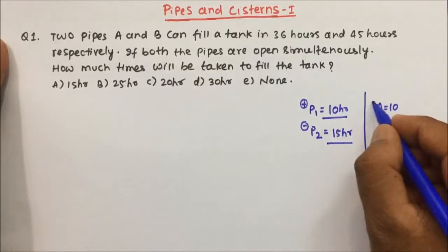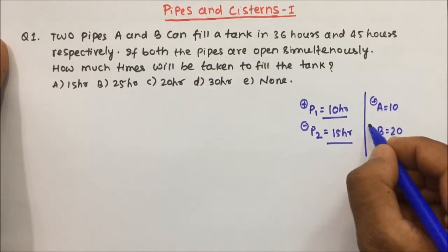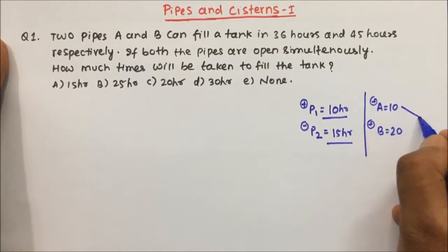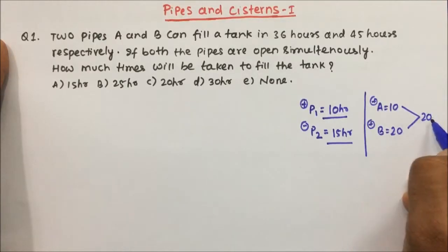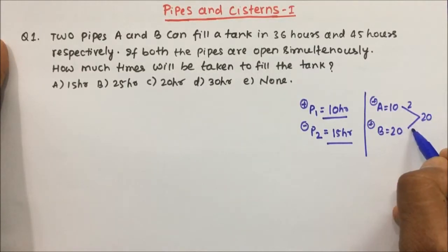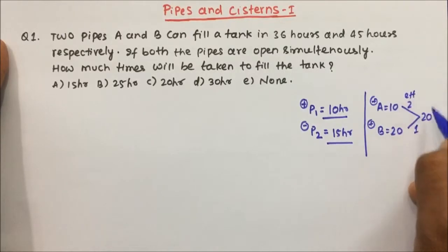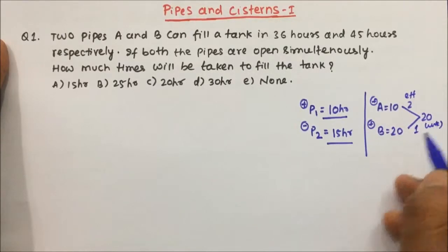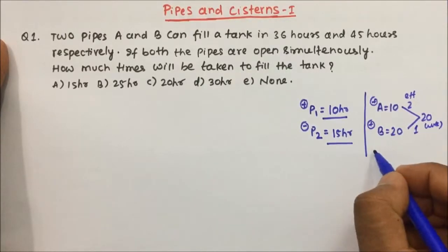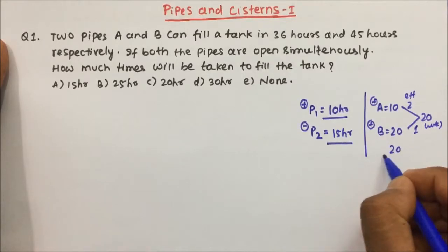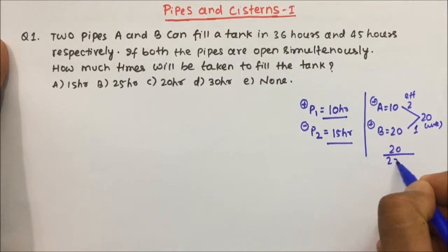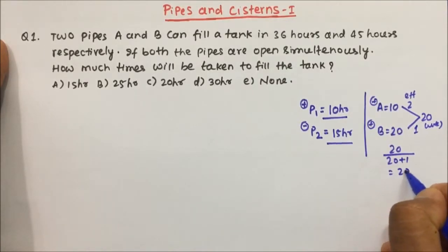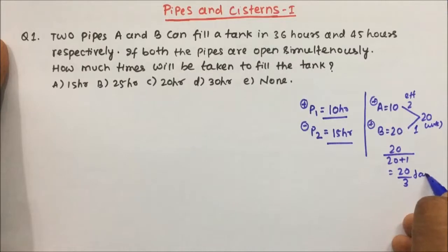But in time and work, all workers are doing positive work. What we did there was take the LCM of 10 and 20, which is 20. Then 20 divided by 10 is 2, and 20 divided by 20 is 1 — these become your efficiencies. So A plus B together take 20 divided by 3 days.